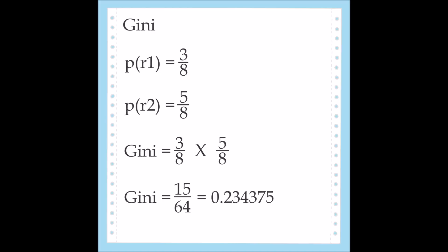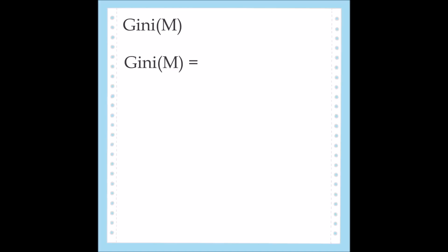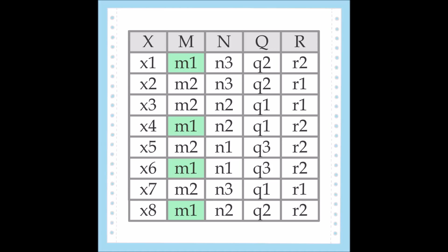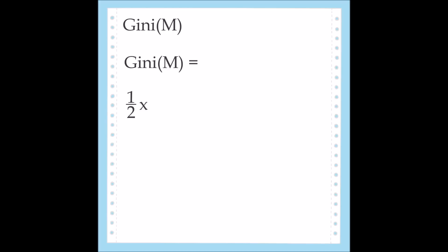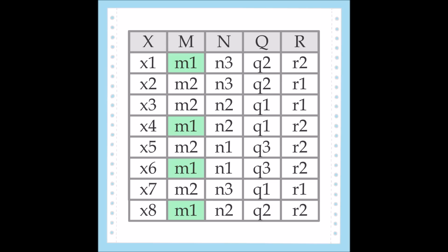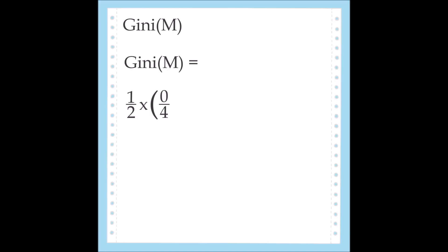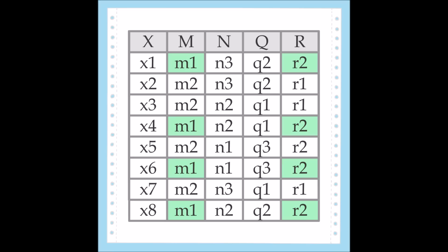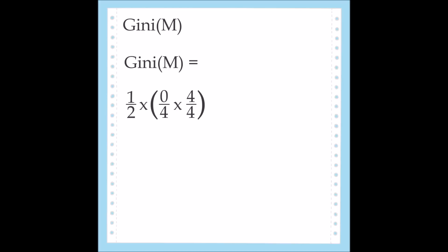I like to use decimals with more complex fractions. Now that we have calculated the Gini value for the system as a whole, we calculate it for each individual attribute. This is used to determine the splitting attributes. To determine the Gini of M, first we find the probability of a particular M value. Starting with M1, M1 appears 4 times — 4 out of 8 tuples — which can be reduced to a probability of 1 half. Next, multiply that times the probability of M1 sharing a record with each value of R. M1 and R1 are never in the same tuple, so the probability of them being together is 0 out of 4, or just 0.